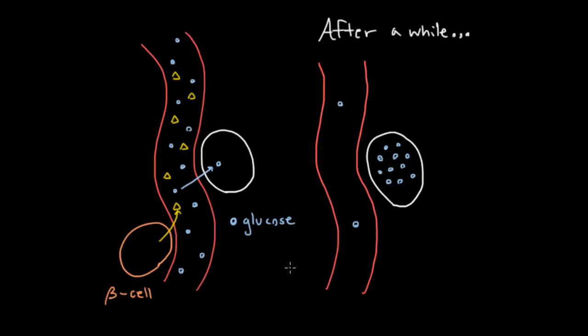But it is stored there, and so now that there's very little glucose in the blood, your beta cells are no longer going to be putting insulin into the blood. So a question you might have is, now if you haven't eaten for a while, how do you actually make use of the glucose that you stored?